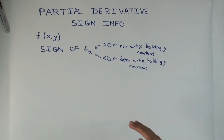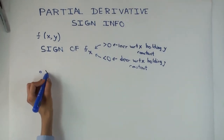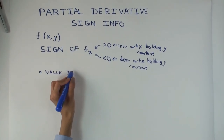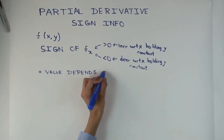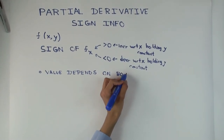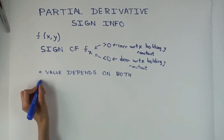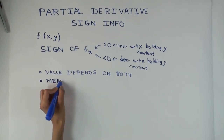Now I want to go a little more into the subtleties. There are two general subtleties to remember with respect to partial derivatives. First, the value depends on all inputs — in this case on both x and y. So if I'm trying to calculate f sub x, it depends on both x and y at the given point. The second thing is that the meaning depends on the coordinate system.